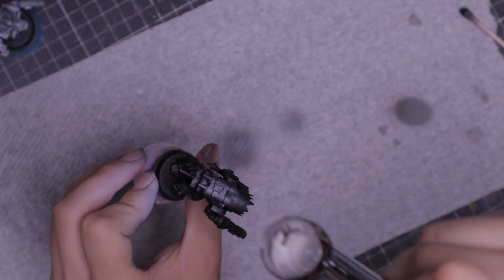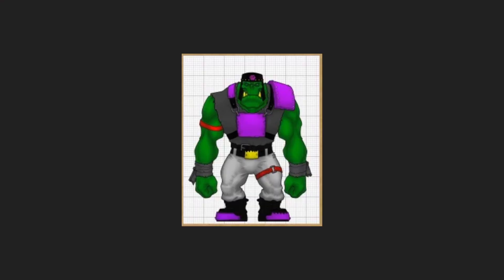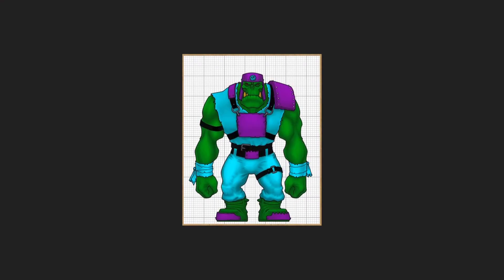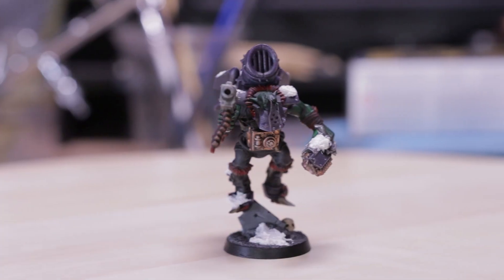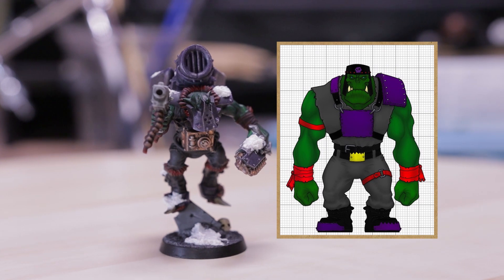I start by priming each mini with a pre-shade. Now as I said, Tyson liked five different schemes and has even picked out shades, so I'll break each scheme down one by one. For the first scheme, a dark grey with purple armour plating.